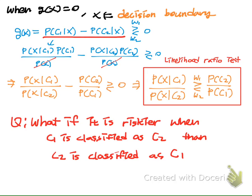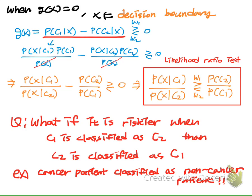This is how we make decisions given observations and priors. Now our question is: what if it is riskier when class 1 is classified as class 2 than when class 2 is classified as class 1? For example, if we know it's riskier to classify cancer patients as non-cancer patients, how can we make a decision process that considers this risk factor? This is what we are going to discuss in the risk and cost minimization section next.